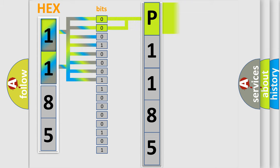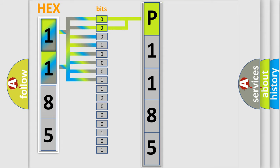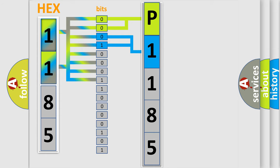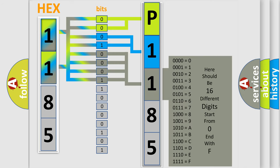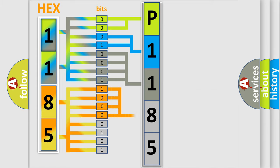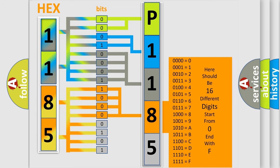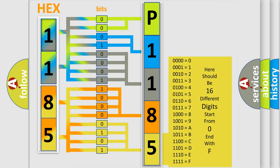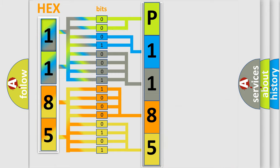By combining the first two bits, the basic character of the error code is expressed. The next two bits determine the second character. The last four bits of the first byte define the third character of the code. The second byte is composed of a combination of eight bits: the first four bits determine the fourth character, and the combination of the last four bits defines the fifth character. A single byte conceals 256 possible combinations.